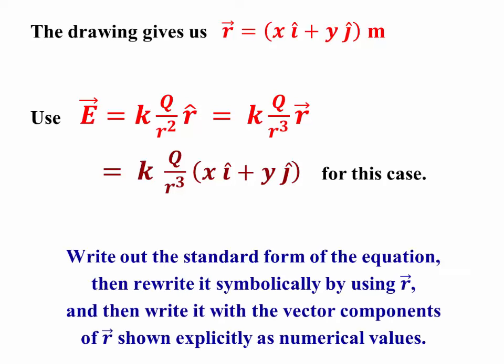So to summarize, write out the standard form of the equation. Rewrite it in terms of r vector to get kq over r cubed r vector. And then fill out the numerical values directly below that expression so you're careful to copy everything in the right place with the right powers.